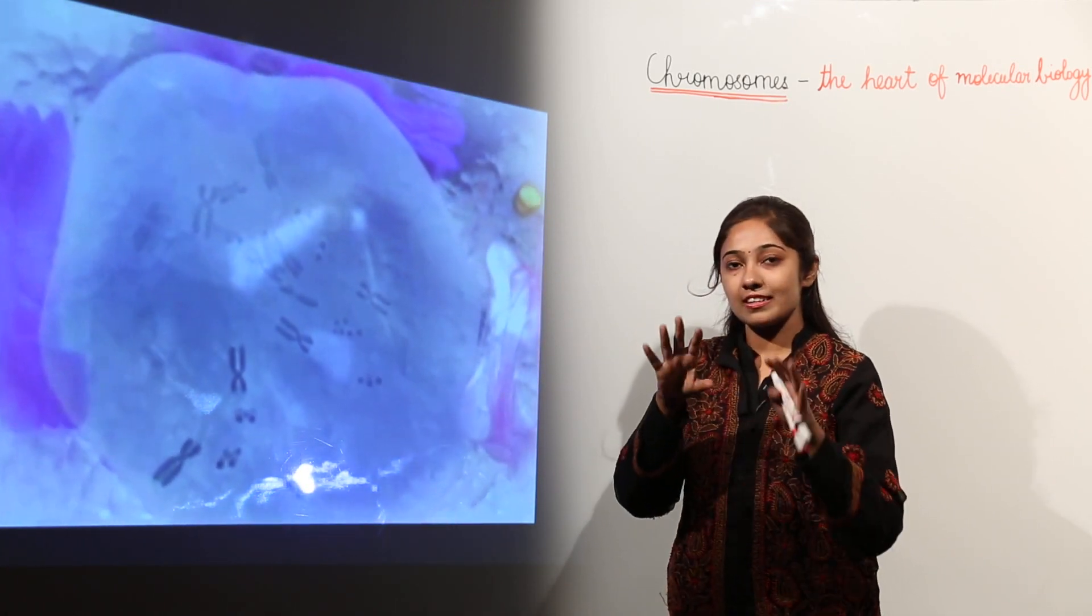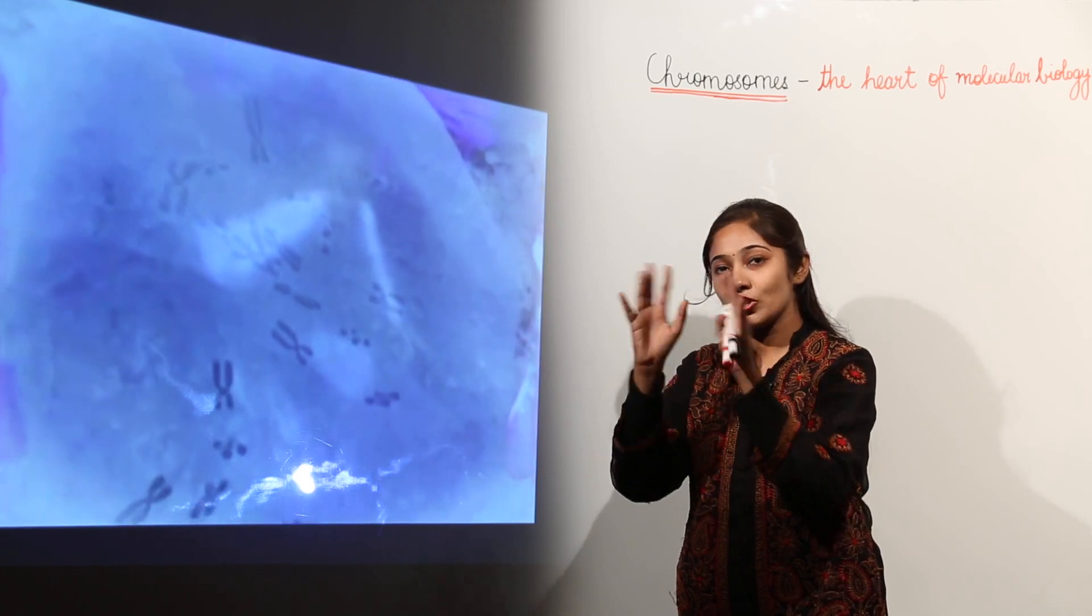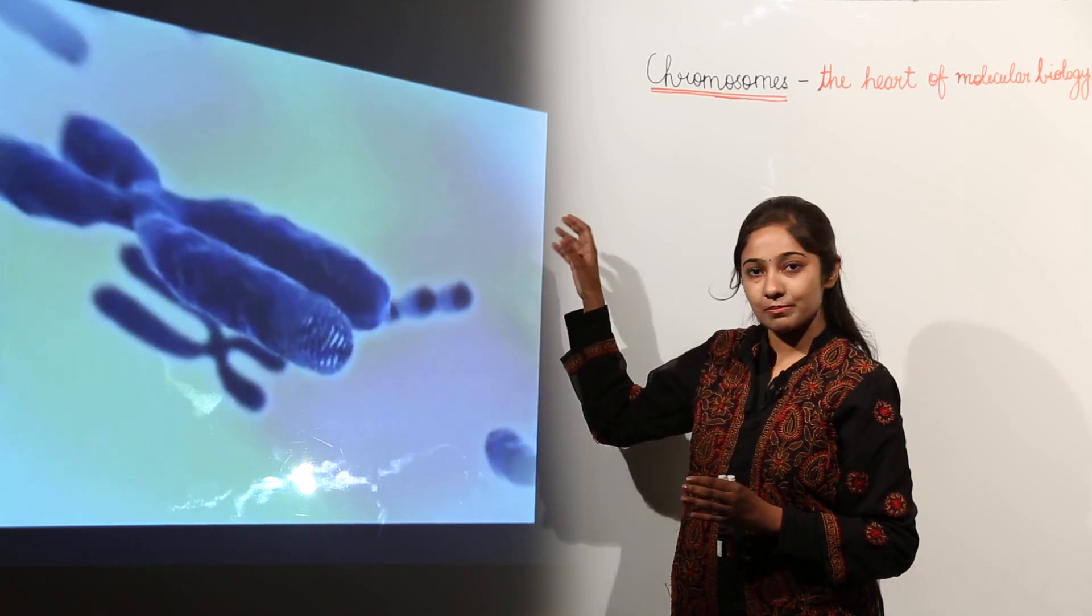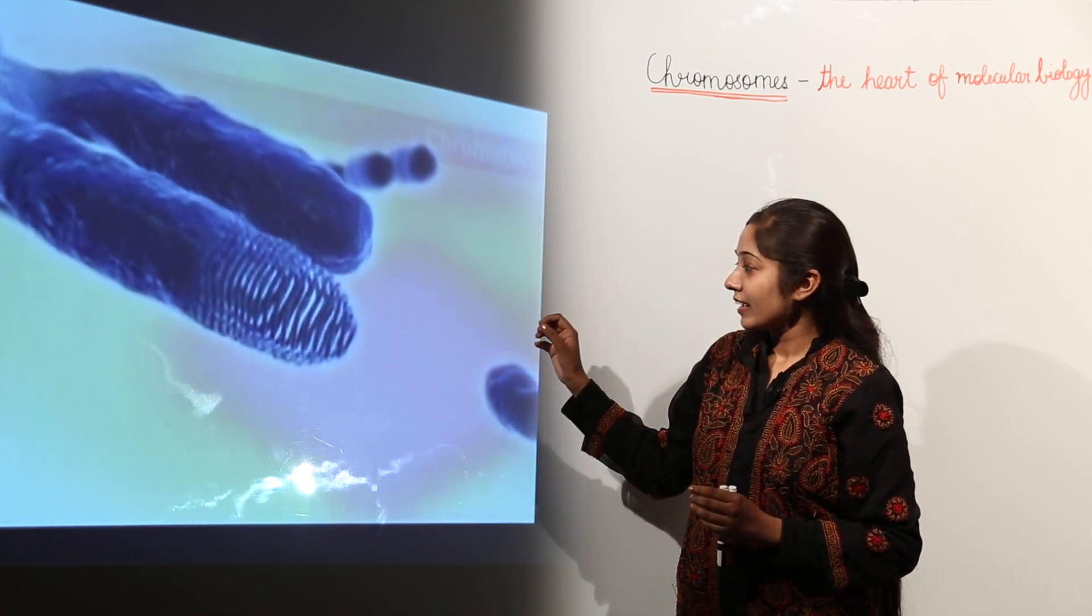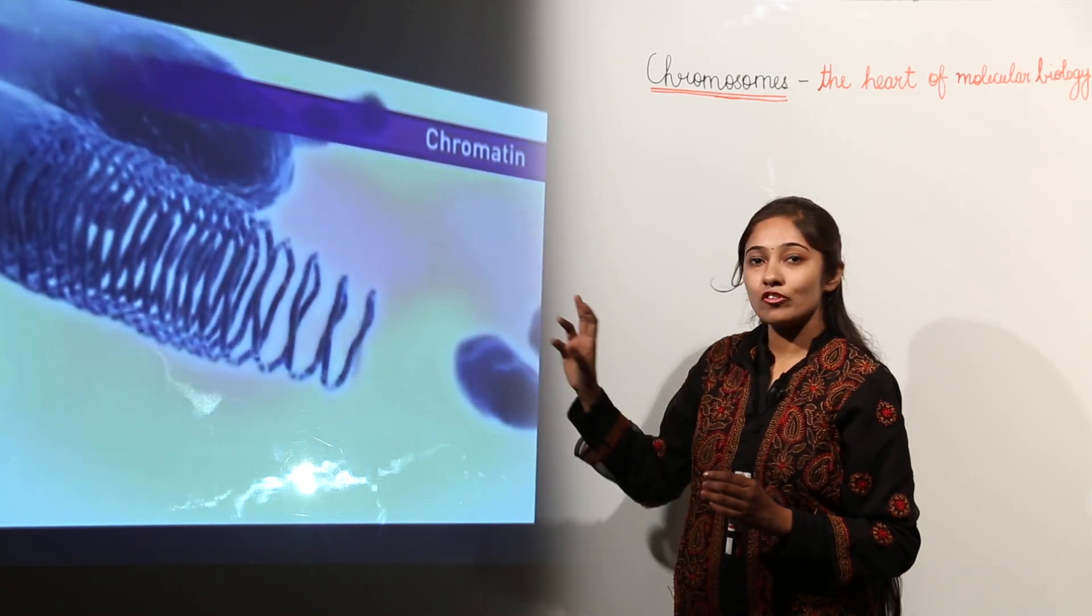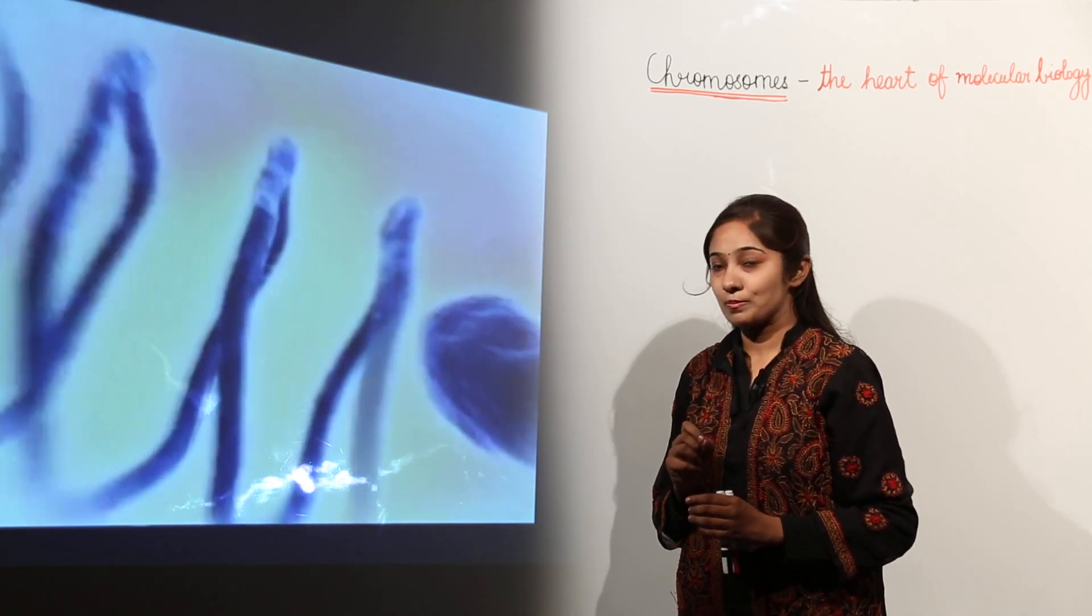But before prophase, during interphase you see a chromatin material. These chromosomes are formed of that chromatin material only, and this chromatin material is formed from repeatedly, repeating units of nucleosomes.